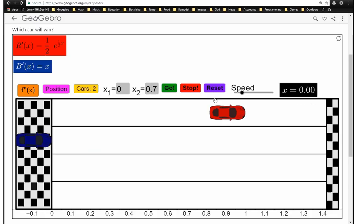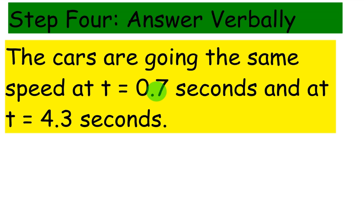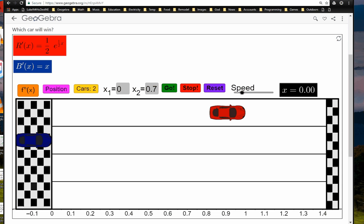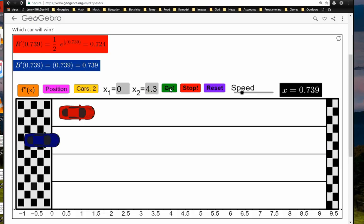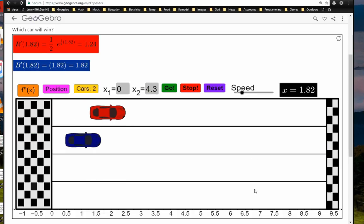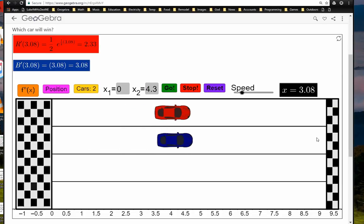Our other value was 4.3, so I'm just going to plug in 4.3 right here for our second x value. It just gives us a chance to pause it at that particular moment. This is the approximation. Just notice right at the finish line here, right when they stop, they're going the same speed.